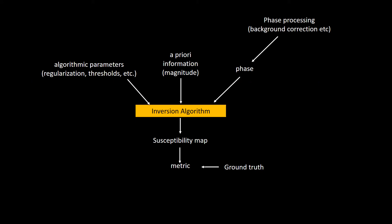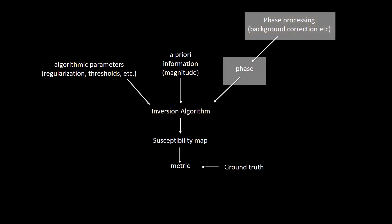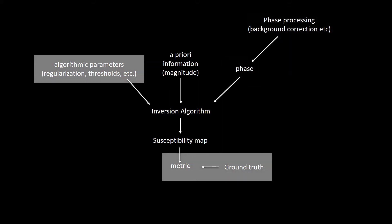There are quite a few moving parts when designing such a challenge with in vivo data. The input phase data depends on acquisition parameters and specific algorithms utilized during processing. To level the playing ground, we decided to provide the input phase to the contestants ourselves. Each reconstruction technique has certain parameters that affect its performance, so to ensure each algorithm performs as well as possible, we provided the ground-truth susceptibility map to the contestants so each group could fine-tune their parameters for a fair comparison.